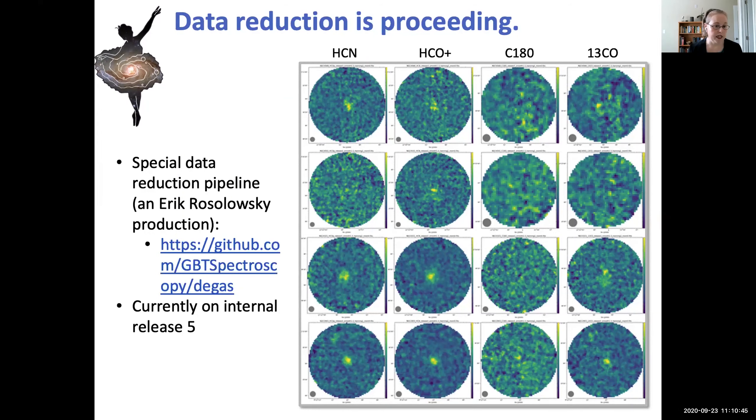We're currently on internal release five. And I've just shown a subset of data from these. Each column is a molecule and each row is a galaxy. We're not expecting to detect C18O, so not surprising that these are empty looking. But you can see we do have nice detections for the most part in HCN and HCO+ with some hints of interesting line ratios. Obviously we still need to do a little cleanup on artifacts and whatnot, but it's currently actually in really exciting shape.